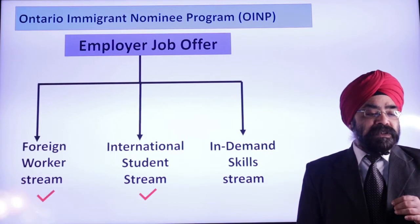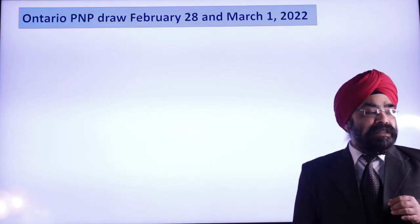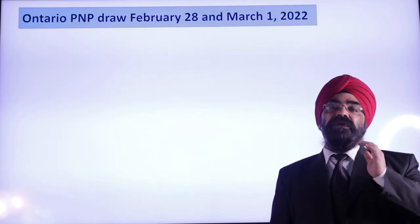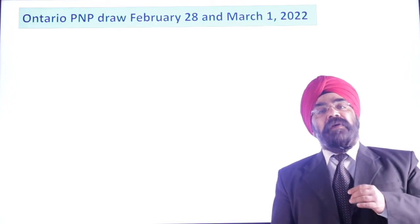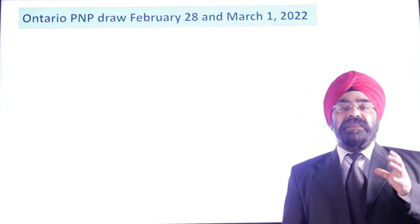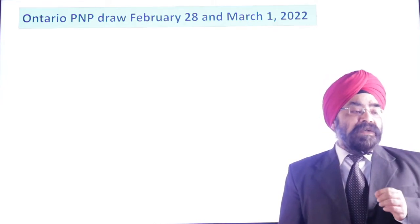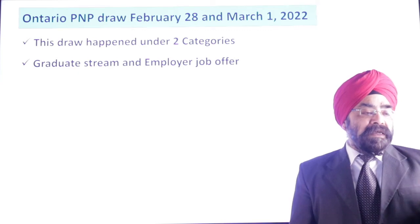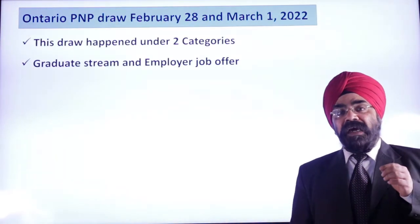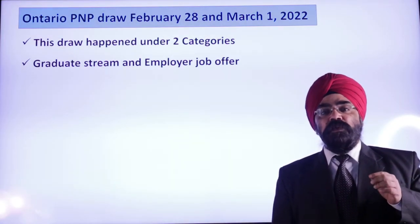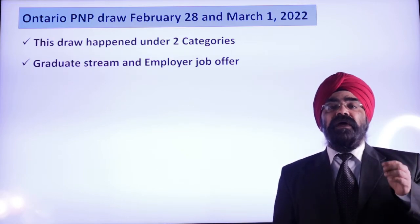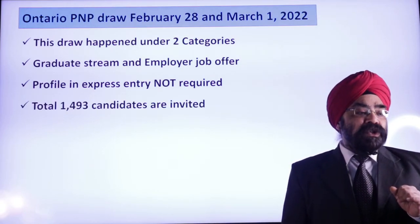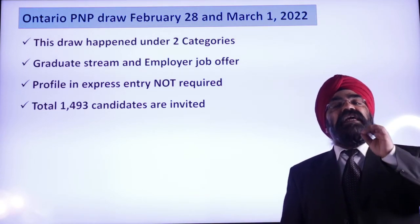This draw was split across two dates: half happened on February 28th and the remaining half on March 1st, combined resulting in a mega draw. It happened under two categories: Graduate Stream and Employer Job Offer. A profile under Federal Express Entry is not required for these programs, as they are not tied to the Federal Express Entry stream. Total candidates invited were 1,493.